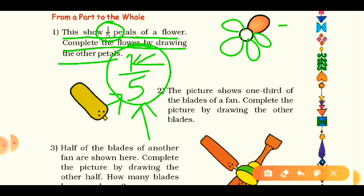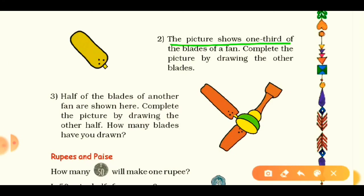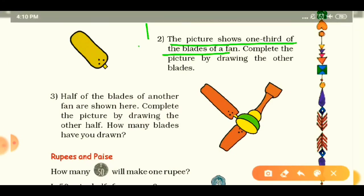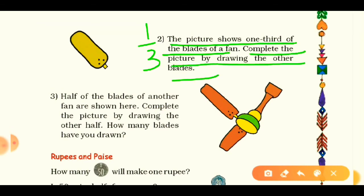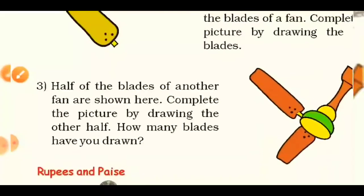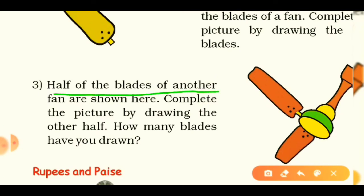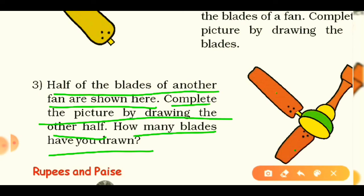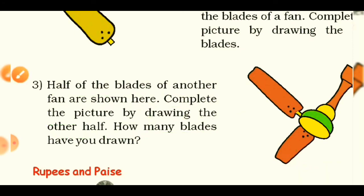Next, the picture shows one-third of the blades of a fan. One-third means one upon three, so complete the picture by drawing the other blades — one is already made, so draw two more. Then we have another fan where half of the blades are shown — two blades are shown and two is half, so the total will be double, which is four blades. Draw the other two blades to complete it.